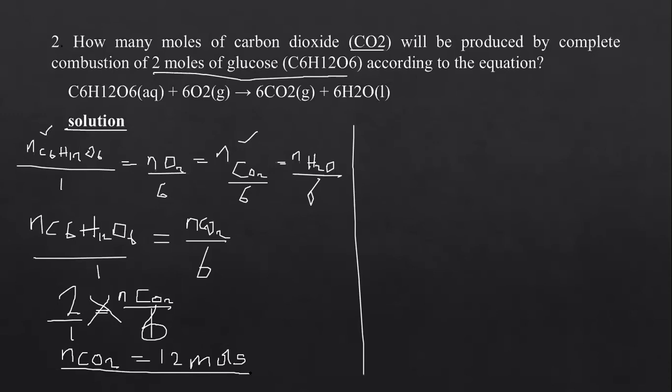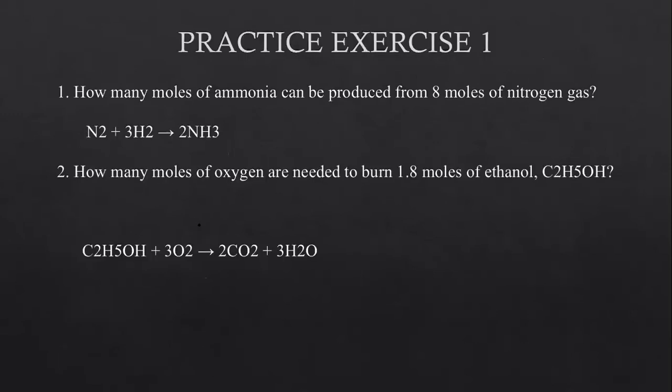That is how you handle mole-to-mole calculations — where they give you the number of moles of one species so you can find the number of moles of another. The simple steps are: write a balanced chemical equation, express it in terms of mole ratios, figure out the two species you are interested in, and use those to find what you are looking for. That is practice exercise number one.